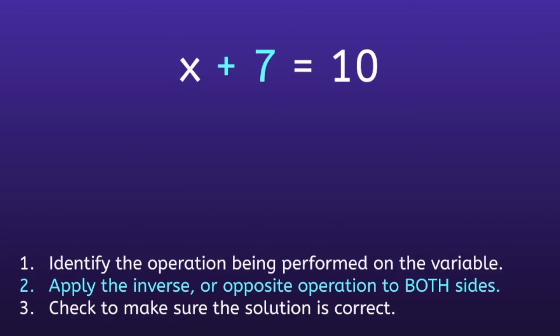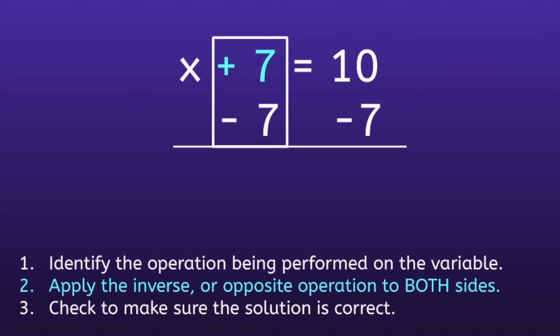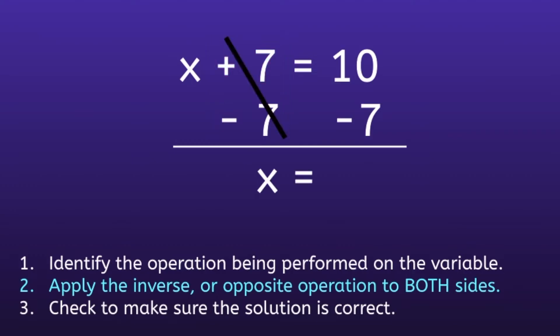This moves us onto Step 2: Apply the inverse or opposite operation to both sides. We have to think, what is the opposite of adding 7? If you said subtracting 7, you are correct. So we want to subtract 7 on both sides of the equal sign. On the left side, we have a positive 7 minus 7, and positive 7 minus 7 is equal to 0, which will leave us with just X on the left side — which is exactly what we want to get the variable by itself.